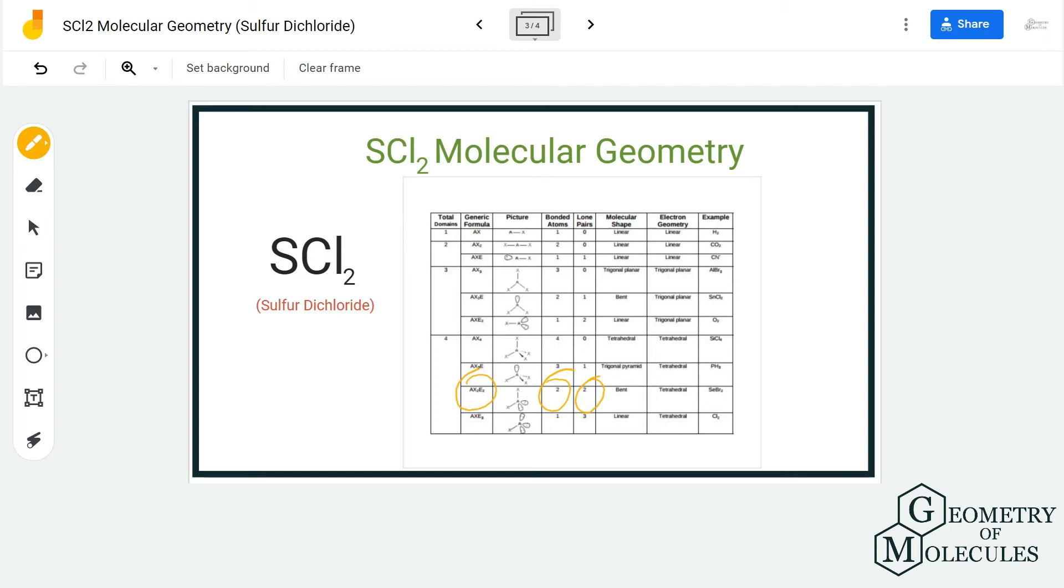It has a bond angle of approximately 109.5 degrees. It might not be exact for this molecule, but this is the overall molecular geometry, shape, and bond angle for SCl2 - a bent molecule with tetrahedral electron geometry and approximately 109.5 degrees bond angles.